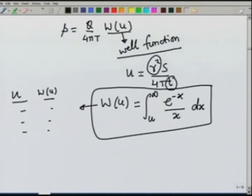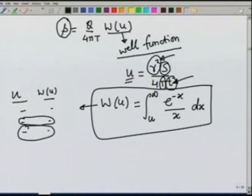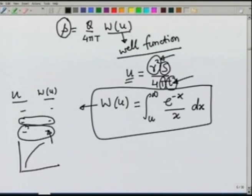If S and T are given and we want to estimate drawdown at any observation well at a given time, we compute u for any time, look up W(u) from the table (interpolating if needed), and directly obtain s, since Q and T are assumed known. W(u) can also be expanded as an infinite series: W(u) = −0.5772 − ln(u) + u − u²/(2·2!) + u³/(3·3!) − ... Once W(u) is known from the table, figure, or series, the drawdown is straightforwardly obtained.